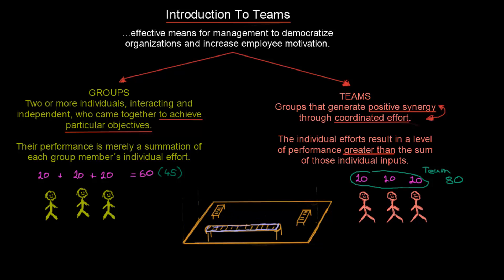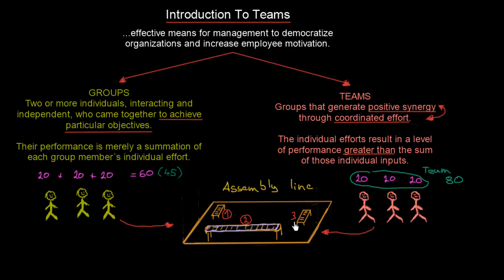Let's think about a concrete example using an assembly line with three activities: activity one, activity two, and activity three. What a group will do is that each individual will say: I'm going to work on activity one, then activity two, then activity three — essentially working alone for eight hours, then the next person for eight hours, and the third for eight hours again. So they work as individuals and their performance is merely a summation of each individual effort.